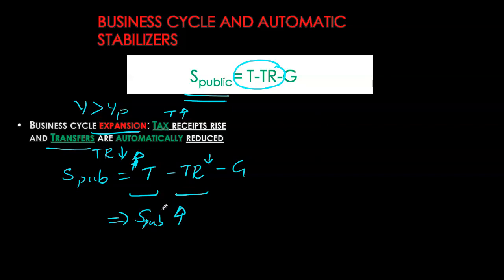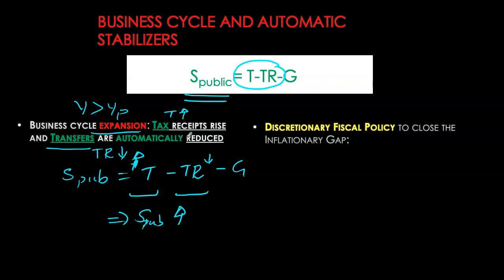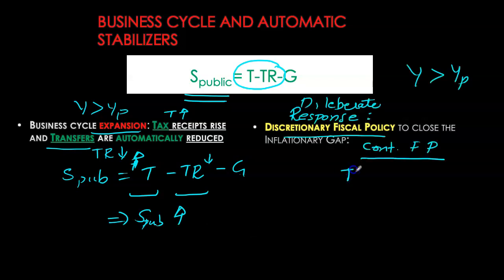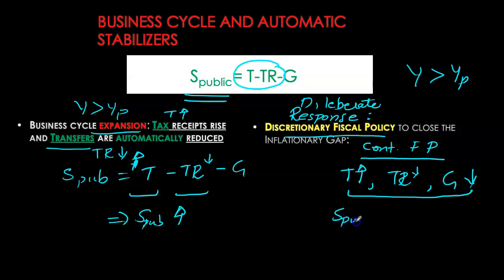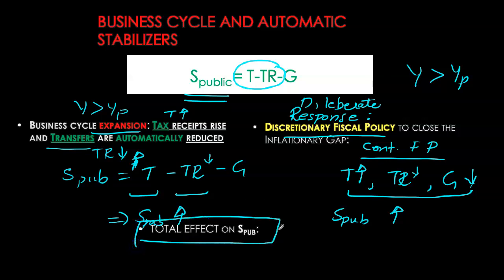Compounding this with how government responds to an expansionary gap: the initial impact comes from the business cycle effect. Government will then try to close the gap through contractionary fiscal policy — increasing taxes, reducing transfers, or reducing government spending — putting further positive pressure on public savings. A part of the increase in public savings comes from automatic stabilization, and if government actively closes the gap it will further increase public savings. Overall, surpluses tend to become bigger during economic expansions, or deficits tend to become smaller during periods of economic prosperity.